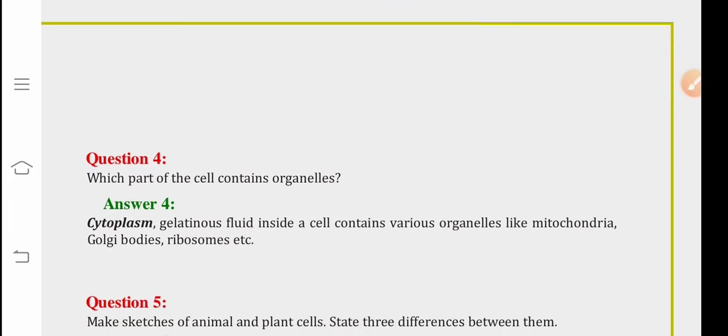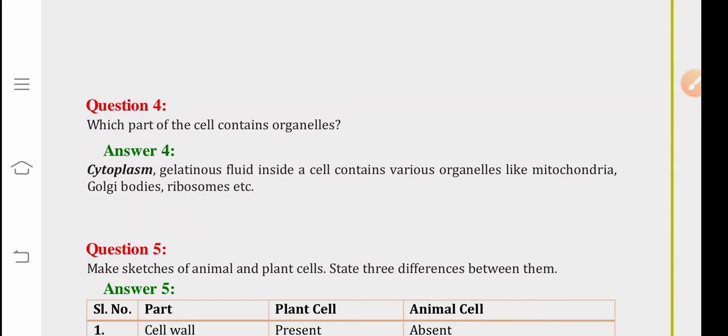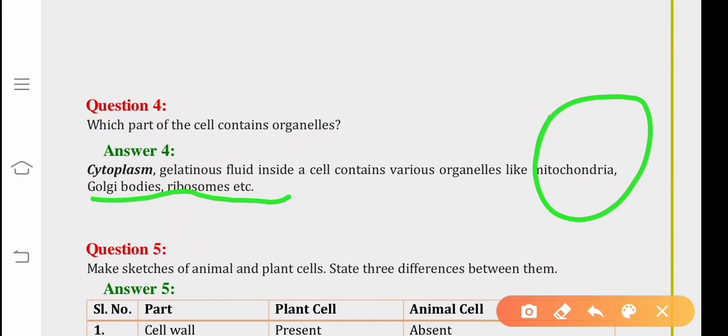Question number four is, which part of the cell contains organelles? As we have already discussed, all the cell organelles like mitochondria, golgi bodies, ribosomes, etc. are found inside the cytoplasm, which is the gel-like substance.